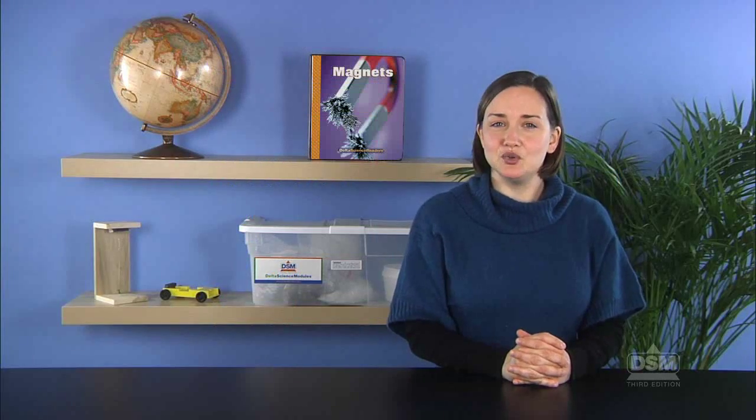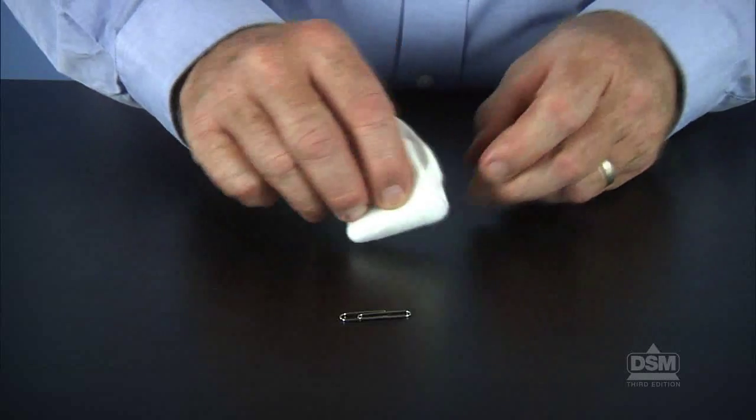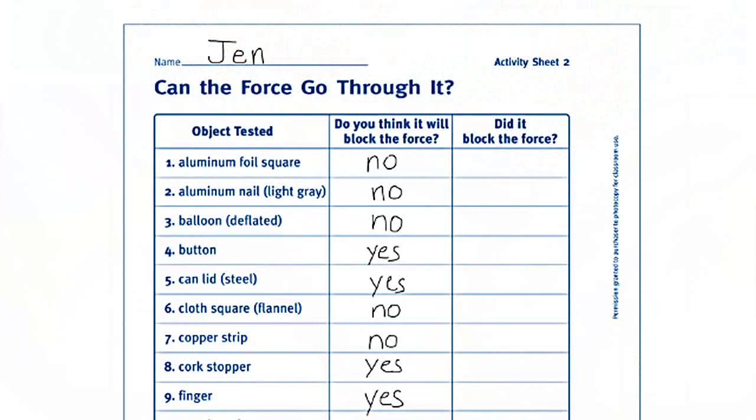Next, distribute the materials. Tell students to wrap the flannel cloth square around the magnet and attempt to pick up the paper clip with the magnet. Have them record their results.